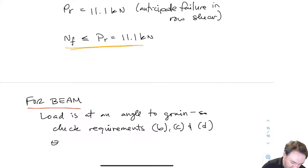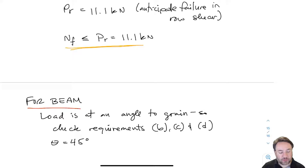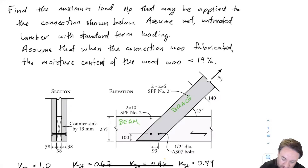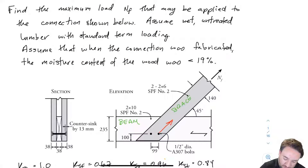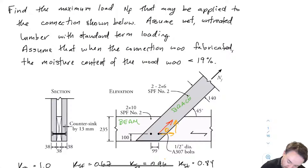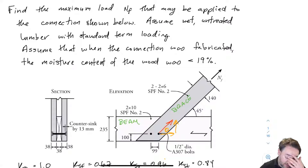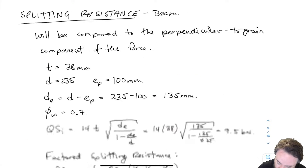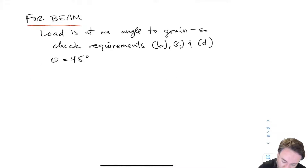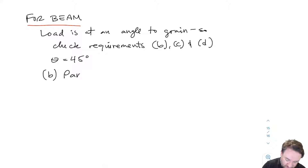For the beam, our load is applied at a 45-degree angle with respect to the grain. So we have one component in the parallel direction and one component in the perpendicular direction. This is our load direction for the bolt in the beam, and theta equals 45 degrees. We are going to compare our loads against those parallel and perpendicular components of nf. Let's do requirement B first, which we've already done for the brace.